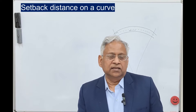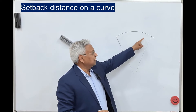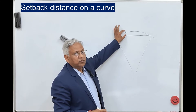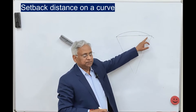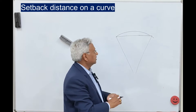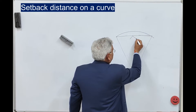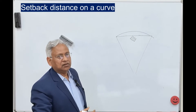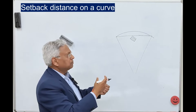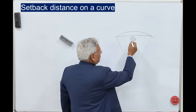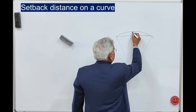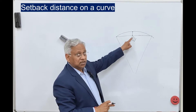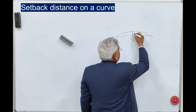Now, how do we calculate this setback distance? Let us say this is the center line of the road on a horizontal curve. A vehicle coming from one direction should be able to see a vehicle coming from the opposite direction — that is the line of sight of the two vehicles. This can be obstructed by a tree, a building, plantation, crops, or some temporary or permanent structure. The setback distance is the distance from the center line of the road to the obstruction to the line of sight. Let us denote that setback distance as m.